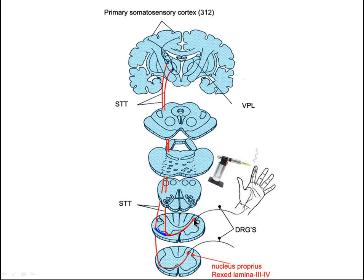Nucleus proprius then sends out an axon of its own — there are thousands of neurons here. These axons come out, travel in the gray matter of the spinal cord, leave the gray matter in the ventral part of the spinal cord called the anterior commissure, and cross the midline.